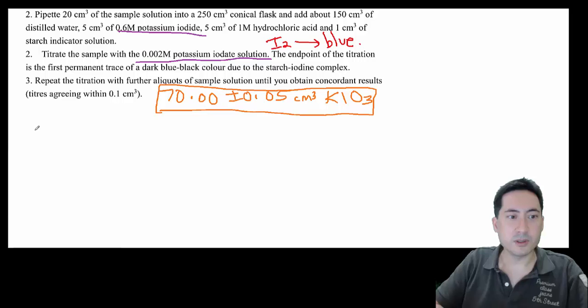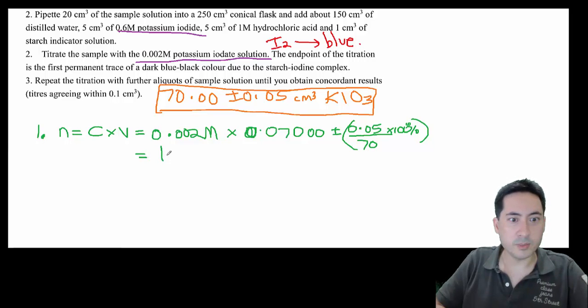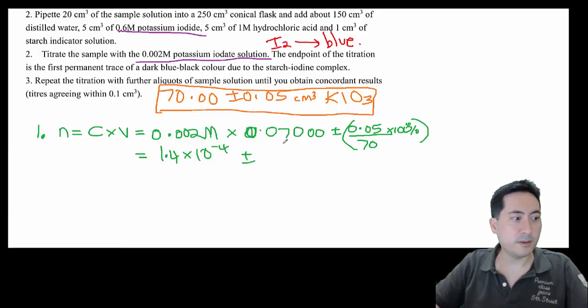Once it's stopped converting back to iodine, it'll then react with the starch and go blue. So I don't know what your numbers were, but my students actually got 70.00 ± 0.05 cm³ of potassium iodate. So what we now need to do is, what does that mean? So if we use, first of all, how many moles is that? So let's work out how many moles that is. So first of all, we'll do number one: working out the number of moles of potassium iodate. Number of moles equals concentration times volume, so the concentration here is 0.002 times a volume of 0.07000 ± 0.05.